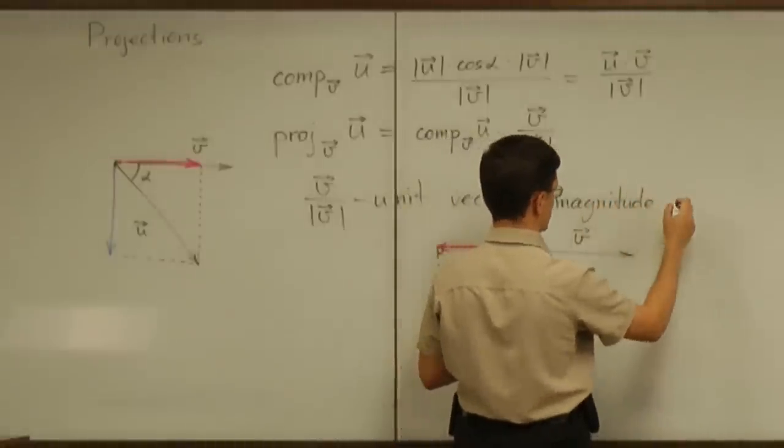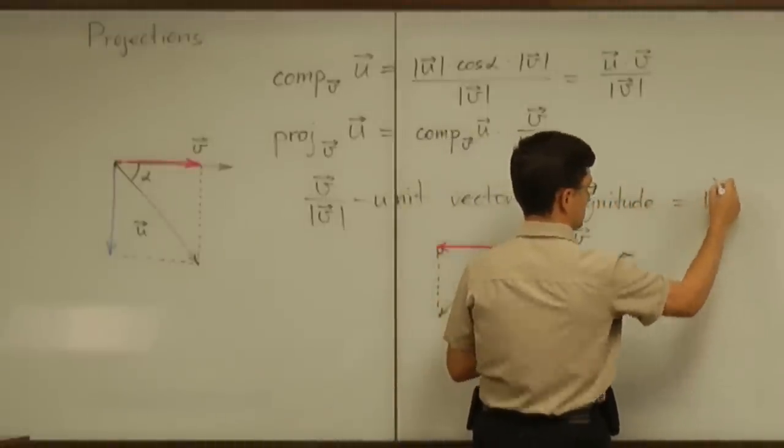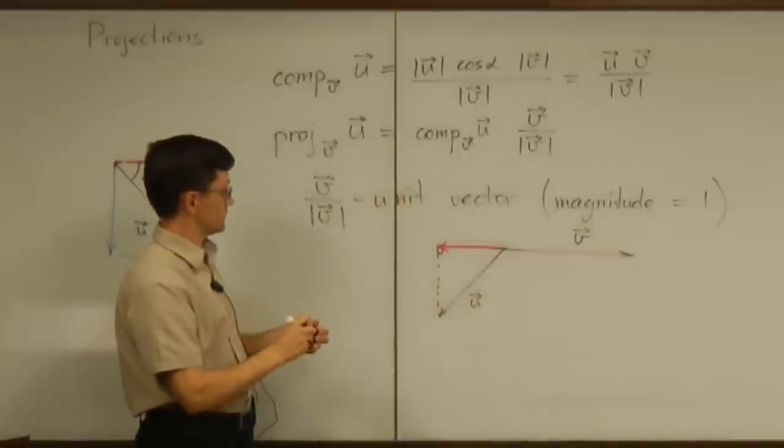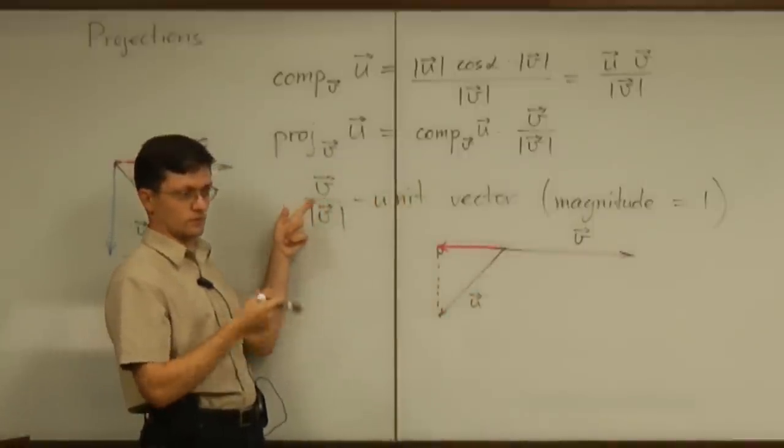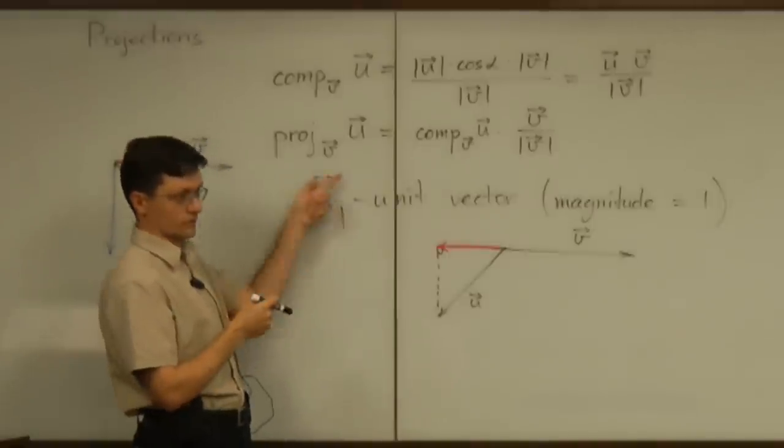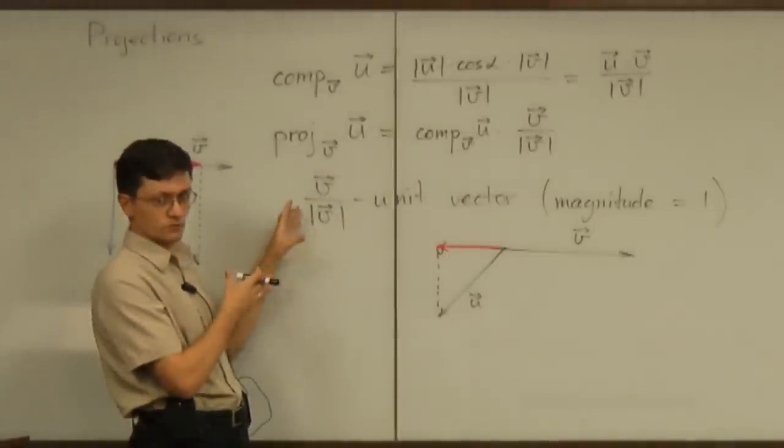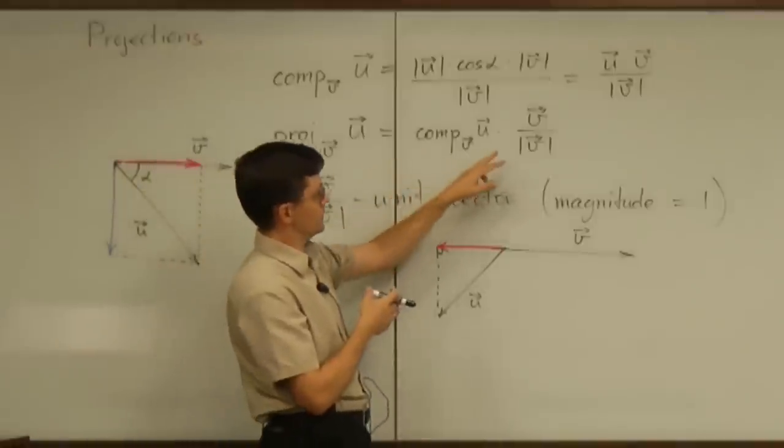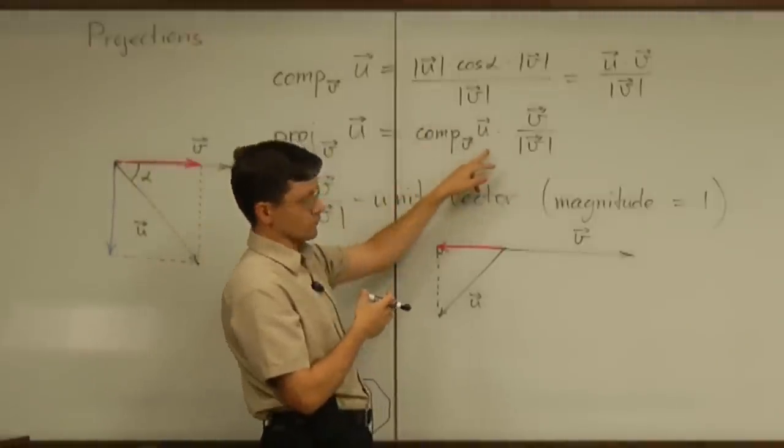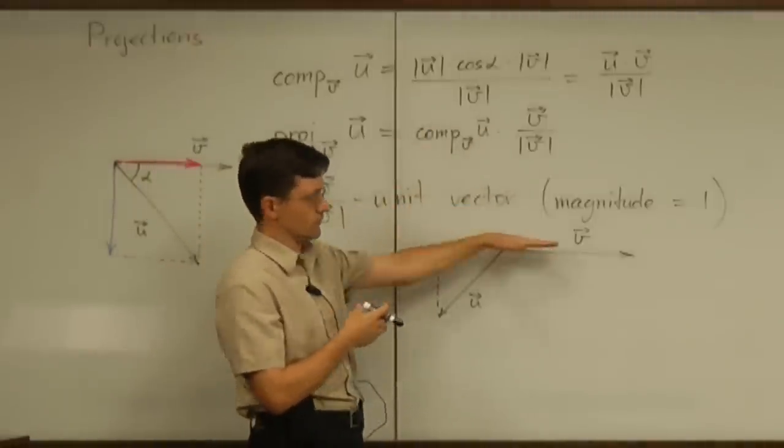So that's the simple idea about how to take any vector and make a vector of magnitude one in the same direction. Basically, specifying the direction only, not the magnitude of the vector. So in this case, we know what the magnitude should be of the vector in this direction, of this red vector.